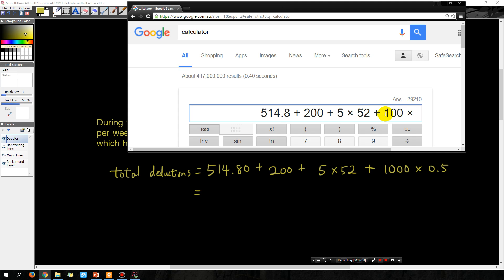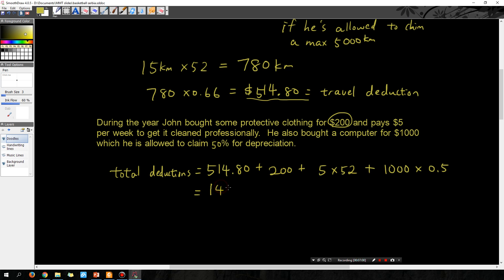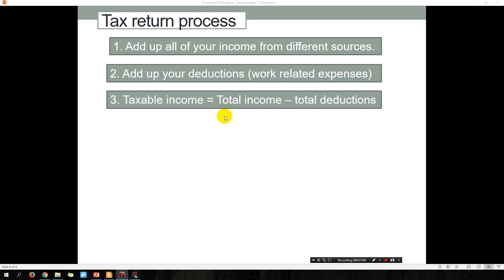Let's type all of this into the calculator: 514.8 plus 200 plus 5 times 52 plus 1,000 times 0.5 is just 500, but anyway let's just type it all in and we got 1474.80. That is the total amount of deductions.